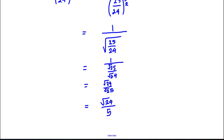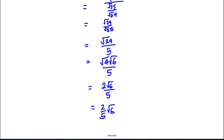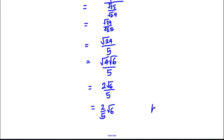Now, the square root of 24 — can we simplify that? We can write it as the square root of 4 multiplied by the square root of 6 over 5, and the square root of 4 is 2, so that's 2 root 6 over 5, or 2/5 root 6. So going back to our original question, what's K where K is rational? K is clearly 2/5. And rational means it's a fraction, so we're done there.